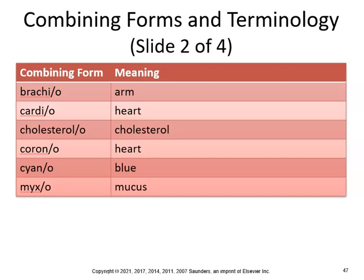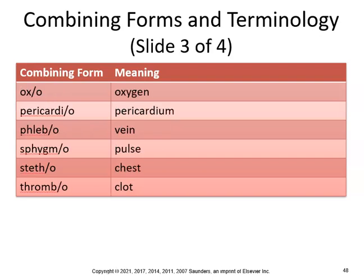Bradycardia versus tachycardia: brady means slow, tachy means fast. Hypercholesterolemia is the condition of excessive cholesterol in the blood. Cyanosis is the abnormal condition of blue discoloration. Ox means oxygen, and pericardio refers to the pericardium.